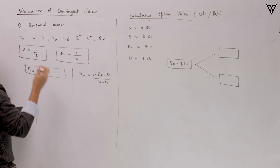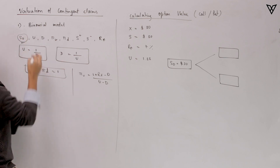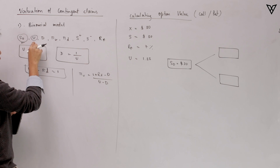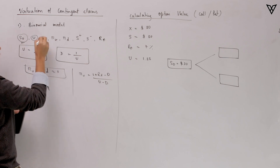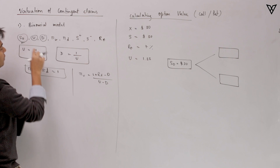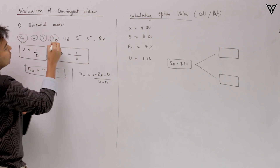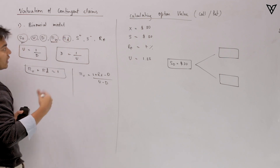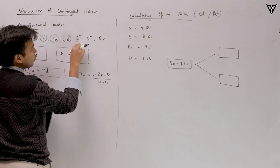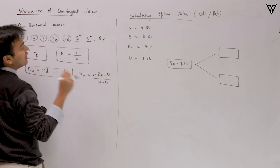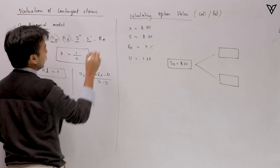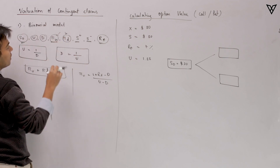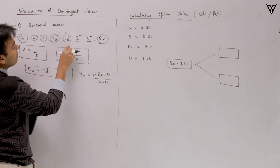Let's understand the basic terms first. S0 is the current stock price. U is the up factor — how much do we expect the stock price to increase by in one time period. D is the down factor — how much do we expect the price to go down in that same time period. Pi U is the probability of the stock going up, and Pi D is the probability of the stock going down. S+ is the increased stock price after that time period, S− is the decreased stock price, and RF is the risk-free rate. Pi U and Pi D are the risk-neutral probabilities.